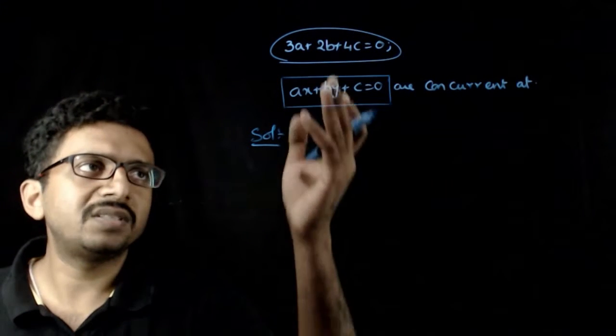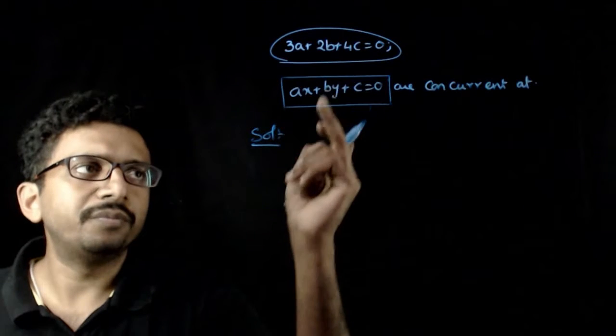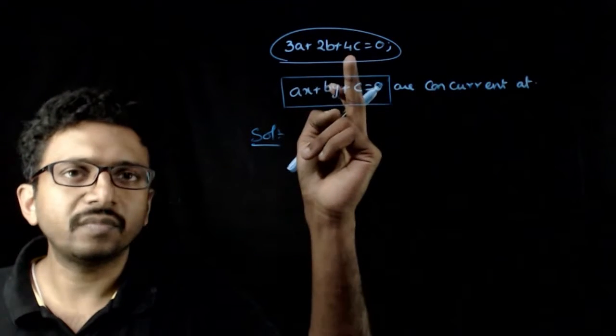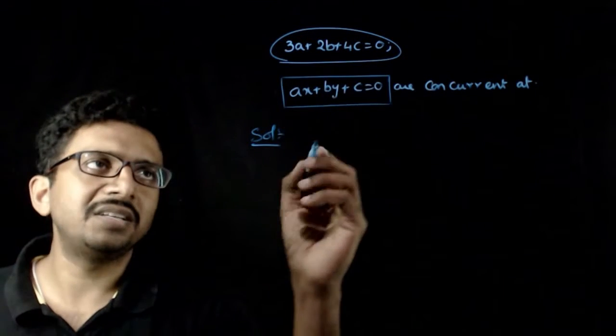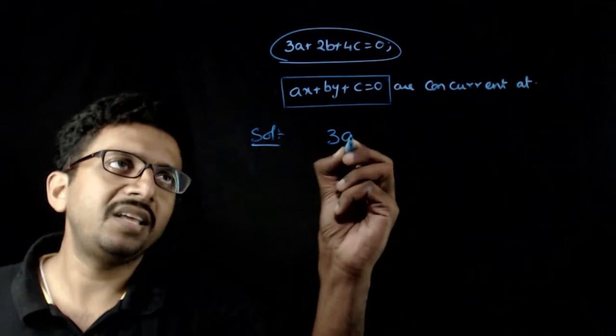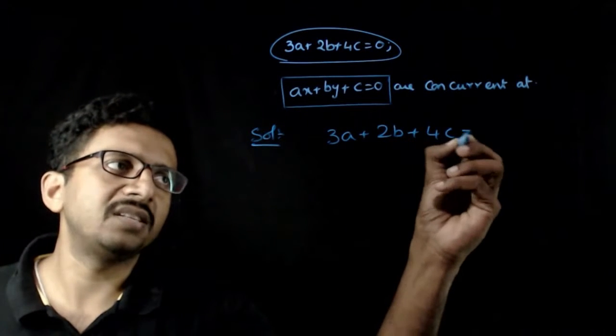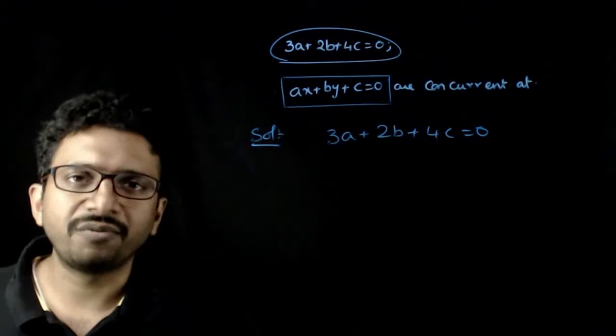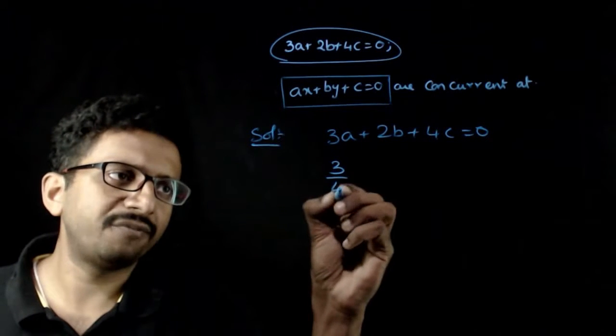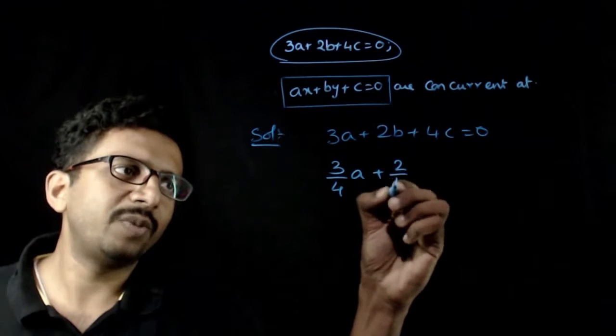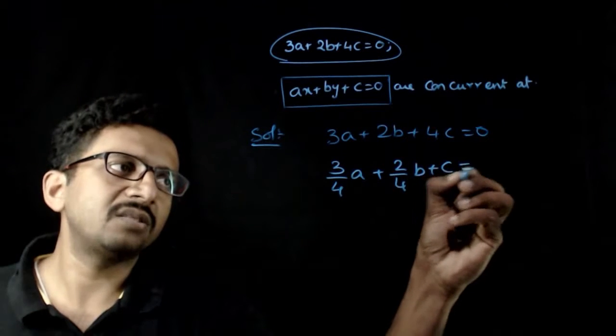To do this, if you convert this condition by dividing 3A plus 2B plus 4C equals 0 by 4, you have 3/4 times A plus 2/4 times B plus C equals 0.